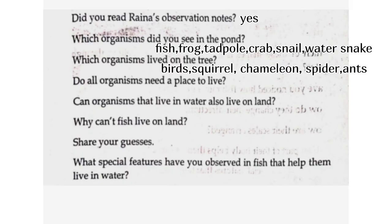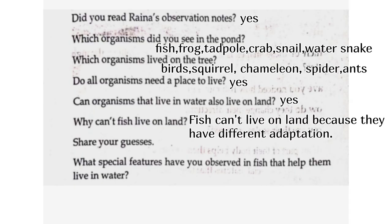Birds, squirrel, chameleon, spider, ants. Do all organisms need a place to live? Yes. Can organisms that live in water also live on land? Yes. Why can't fish live on land? Fish can't live on land because they have different adaptations.